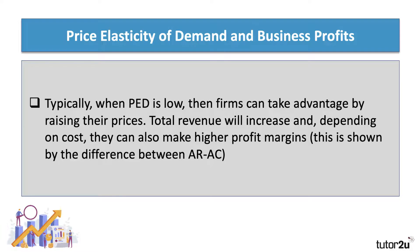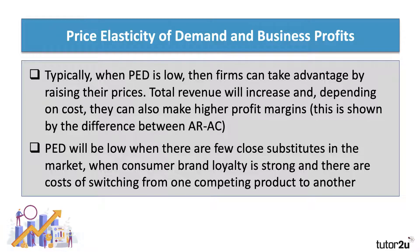When price elasticity of demand is low — less than one — firms can take advantage by raising their prices: total revenue will definitely go up and, depending on costs, they might also make a higher profit margin. One way of measuring this is the gap between average revenue and average cost. Price elasticity of demand tends to be low when there are relatively few close substitutes in the market, when the market is dominated by just a few products, when brand loyalty is strong, and when there are costs of switching from one competing product to another.